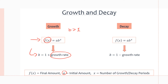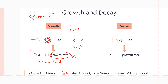A very common b value is 2, used in the scenario where f(x) is doubling each time x increases by 1. Every time x increases, the exponent increases and we multiply by b one more time. So if b equals 2, we multiply by 2 each time x increases by 1. The growth rate is 1 because f(x) is growing 100% more. So b = 1 + 1 = 2, giving the equation f(x) = a · 2^x.